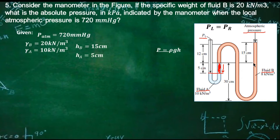Same for fluid B — we put a reference line for this section, and it also provides pressure. The height for fluid B is equal to 15 centimeters. We're looking for the absolute pressure in kilopascal.